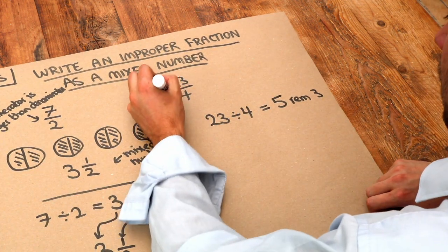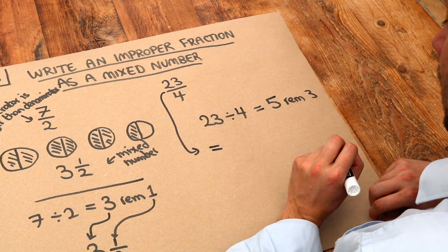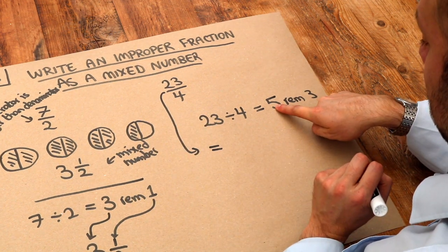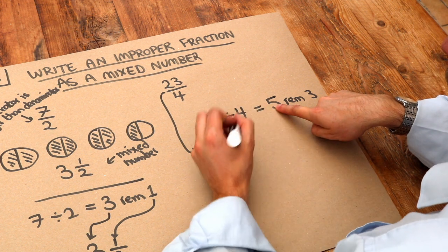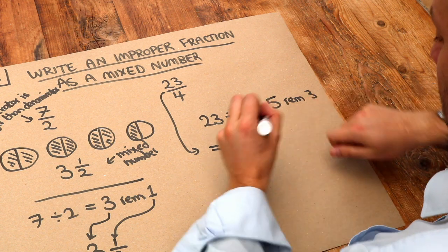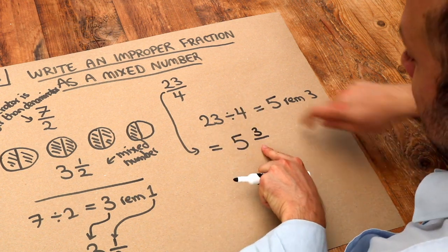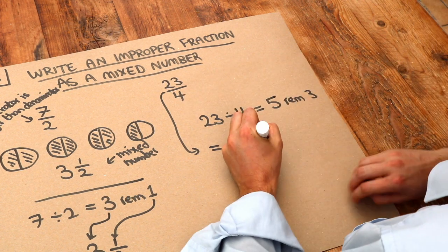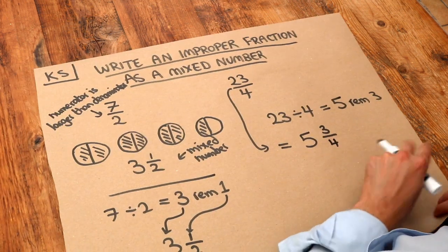Therefore, this as a mixed number is 5, and the remainder goes at the top—remember—and then the denominator is the same as what we have there. So it's 5¾, and that is the complete method.